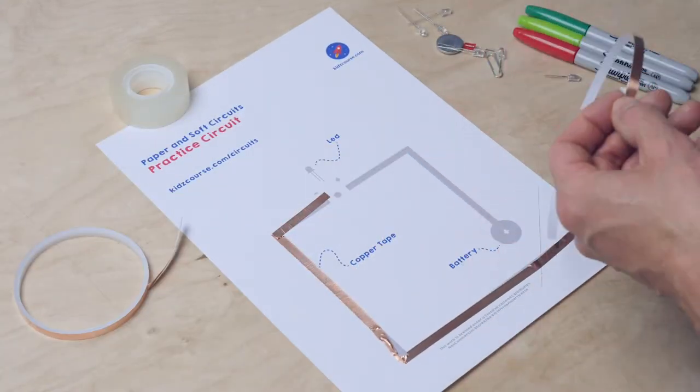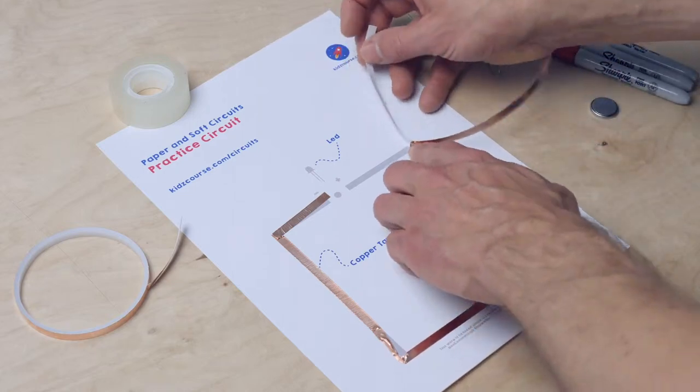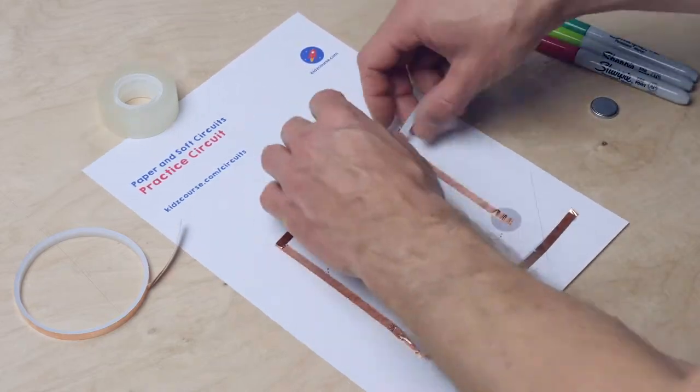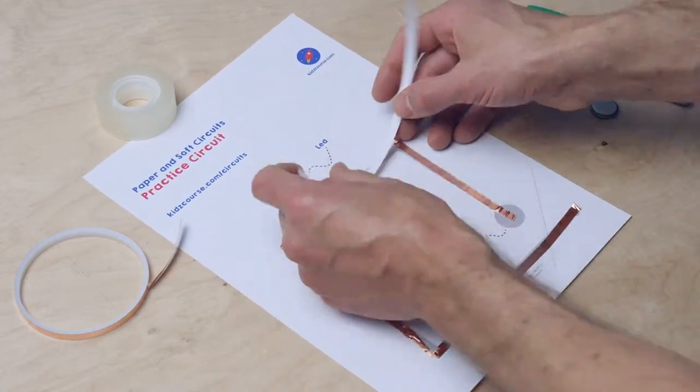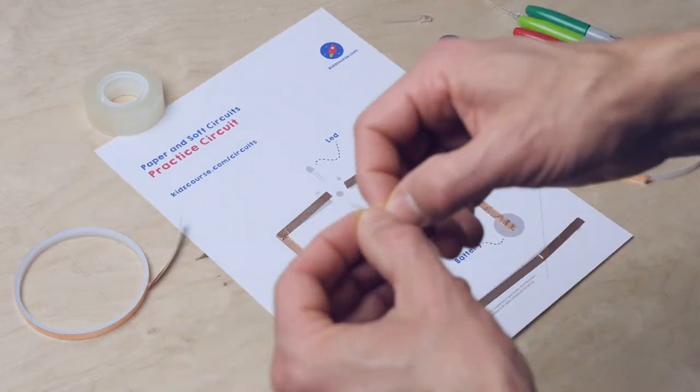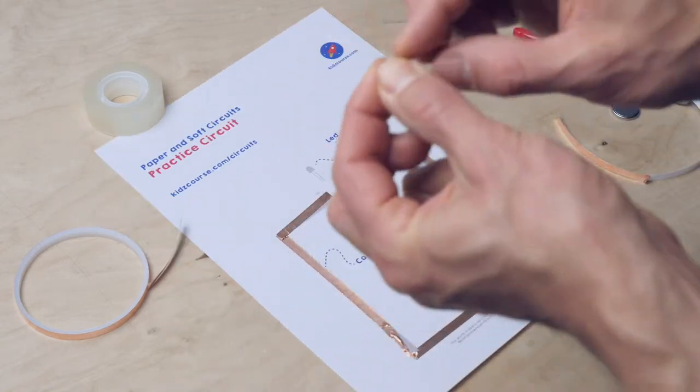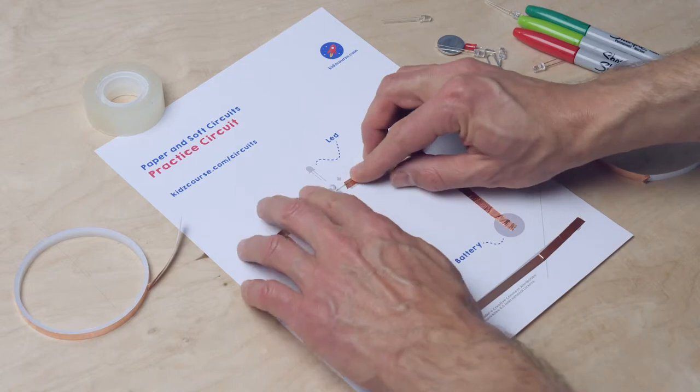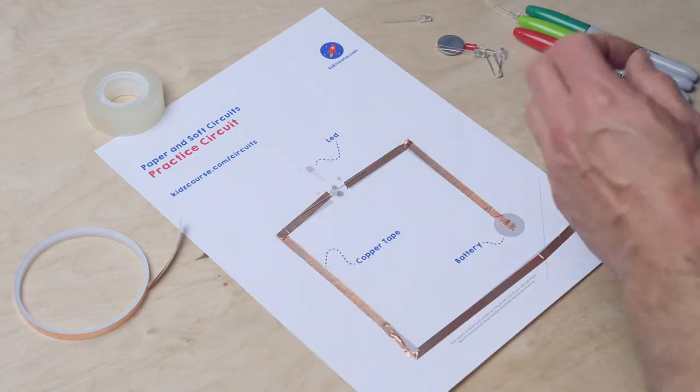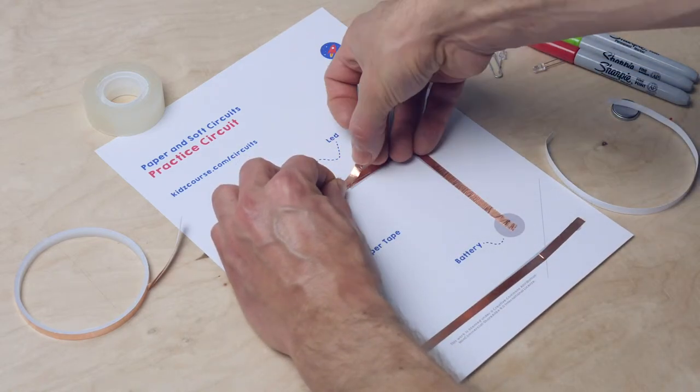The same with the second part. You fold the pins of the LED to the outside and attach it with the two pieces of copper tape. Press it tightly together.